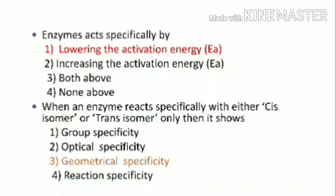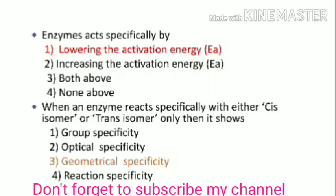When an enzyme reacts specifically with a cis isomer or trans isomer only, it shows geometrical specificity of that enzyme. So option 3 is the correct option.